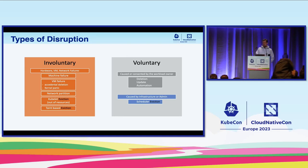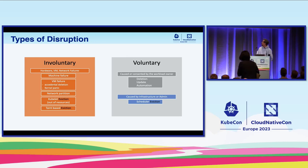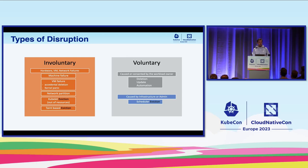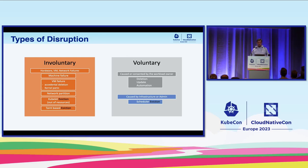Kubernetes offers a protection mechanism in pod disruption budget policy — PDB for short. I'd like to think about PDB policies as a contract between cluster administrators and workload owners. Workload owners want workloads to be highly available, yet cluster administrators need to perform maintenance on nodes, which requires some disruption. The PDB can be viewed as a contract where we agree on how much workload disruption we can tolerate.